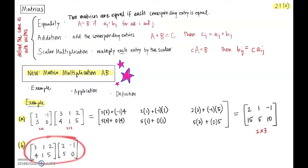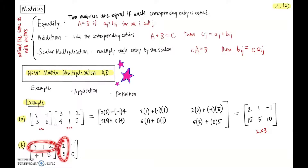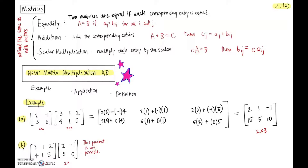Let's take those same two matrices and swap them — putting the second one first. When we try to take this first row and operate with the second matrix's first column, we immediately run into a problem: there are three entries in this first row but only two entries in this first column. So this is a case where it's not possible to multiply these two matrices — their sizes don't match up in the right way to produce a product.